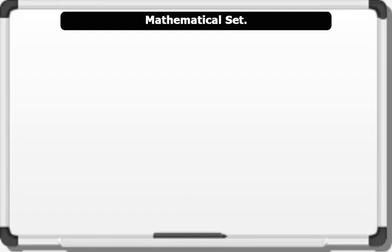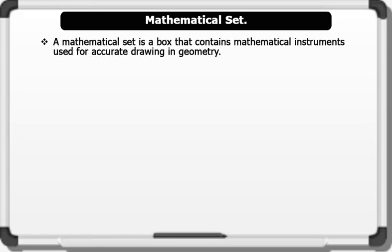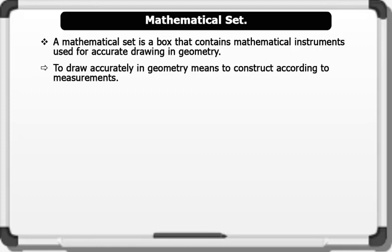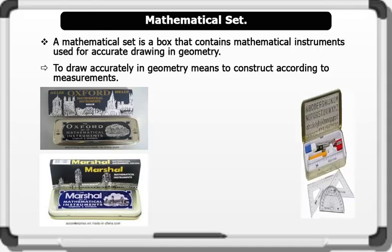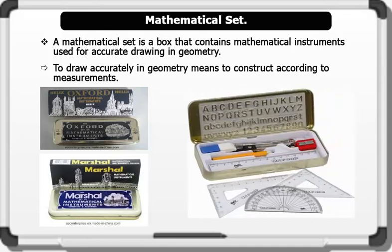Mathematical Set. A set is a group of things that belong together. A mathematical set is a box that contains mathematical instruments used for accurate drawing in geometry. To draw accurately in geometry means to construct according to measurements. Below are examples of mathematical set. The contents of the mathematical set are displayed on the board. Now, let's see the instruments individually.